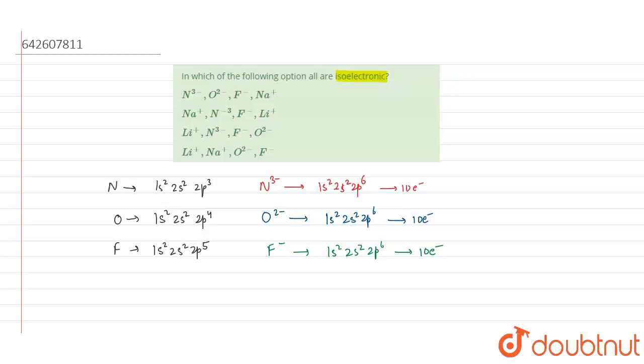Let us see for Na⁺. The electronic configuration of sodium is 1s² 2s² 2p⁶ 3s¹.